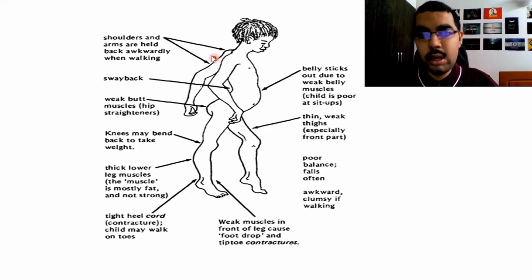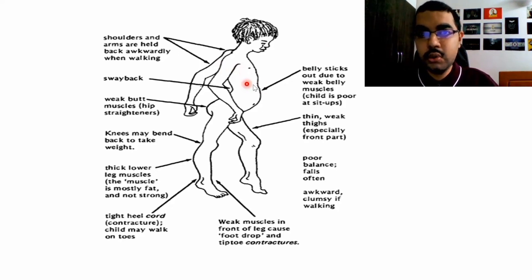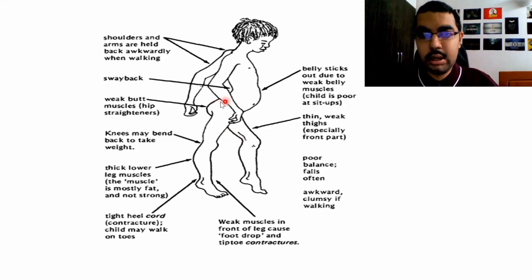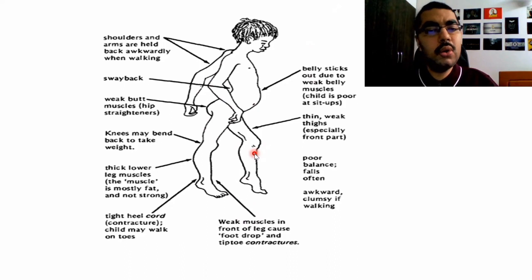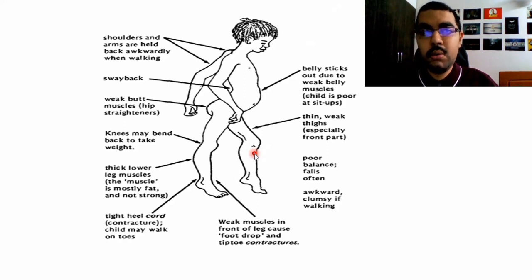Doctors can notice shoulder retraction in these patients. A muscle called serratus anterior, which brings the shoulders forward, becomes weak. Later, the shoulder muscles may also become weak, making it difficult to lift the hand without support. It then starts involving the elbow and wrist. Over time, all of these can result in contractures, and the best way to prevent that is by doing regular physiotherapy.